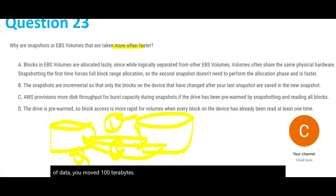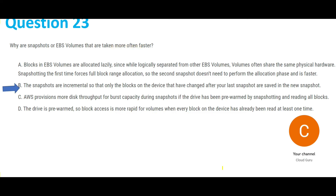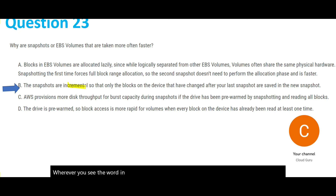On a daily basis only 8 to 10 terabytes come in, so you are moving incremental — 8 terabytes is less than 100 terabytes, that's why it is faster. Wherever you see the word 'incremental,' that is the answer, because only the blocks on the device that have changed after your last snapshot are saved into the new snapshot.